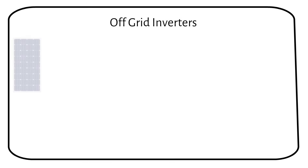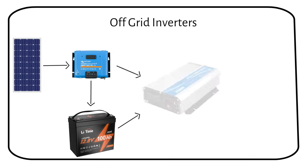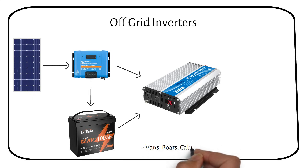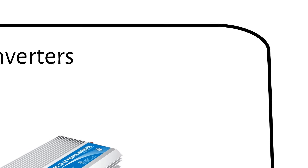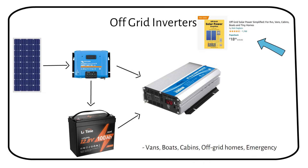An off-grid inverter differs from other types because it draws power from batteries, or a combination of batteries and solar panels. These inverters are crucial for systems that operate independently of the grid, generating their own AC power. They're ideal for use in situations like vans, boats, remote cabins, off-grid homes, or as emergency backup power when the grid fails. Off-grid inverters are central to standalone systems, providing the freedom to generate and use power without reliance on the grid.